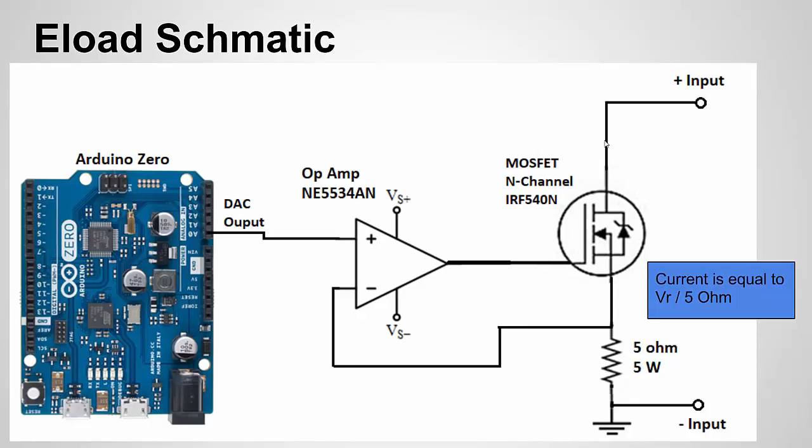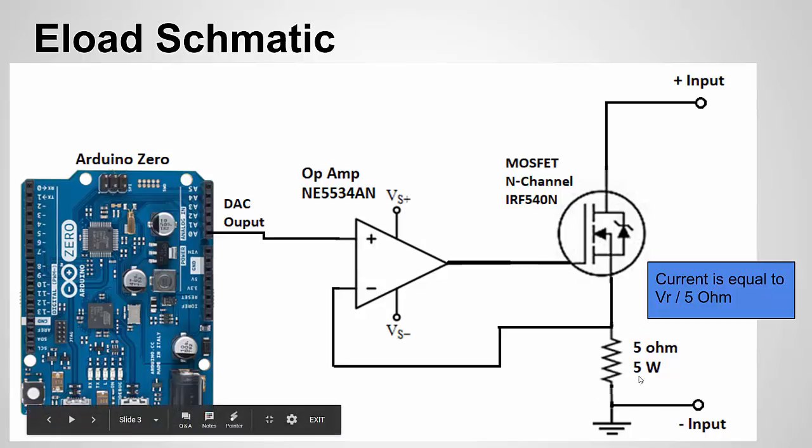Here is the design we're going to use for our simple e-load. First of all you're going to need an Arduino that has a DAC output. So I'm showing an Arduino Zero and that's what I'll be using in my example but you could use the Arduino Duo, the Maker 1000, whatever has a DAC output. You can also see some of the other main parts we're going to use in our design: an op amp, a MOSFET, and a fairly high powered resistor.